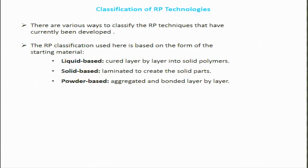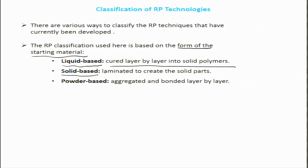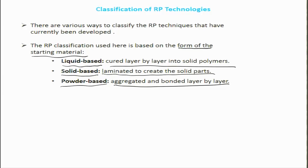To classify the different RP technologies, one basis is the starting material. There could be liquid-based 3D printing processes, where material is cured layer by layer into solid polymers to develop the final 3D shape. There can be solid-based materials — particularly laminates bonded to each other. There can also be powder-based processes, where granules are sintered to each other in a focused manner using laser or other light forms, and these aggregated bonded layers are built up in a layer-by-layer manner to realize the final 3D shape.